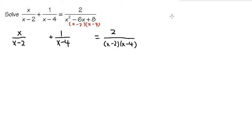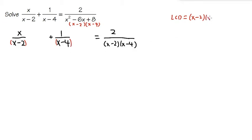Now let's see what the lowest common denominator is, after we have factored out everything in the denominator. We see that we have x minus 2 in common — we just need to put it down once whenever we see a common factor, so x minus 2. We also have x minus 4 appearing here and here, and we just need to put down one of them: x minus 4. This will be the lowest common denominator. So we are going to multiply everything by this.